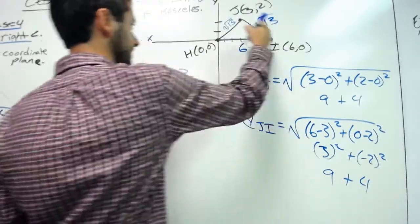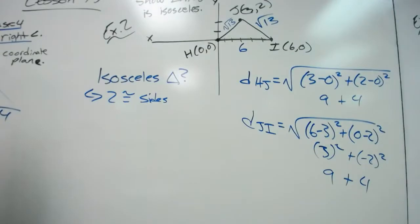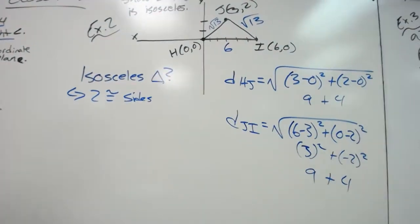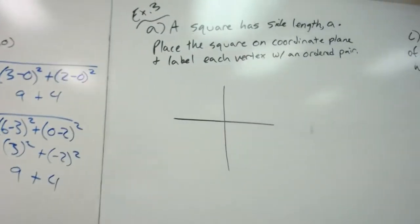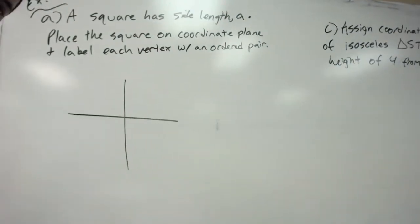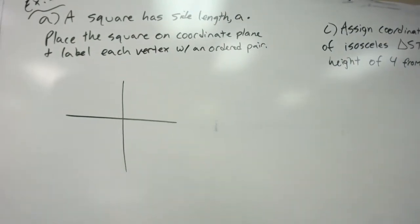So since the sides are equal, we just showed through the distance formula that the triangle HIJ is isosceles. Another example of a proof here. This one can definitely be a little more confusing.